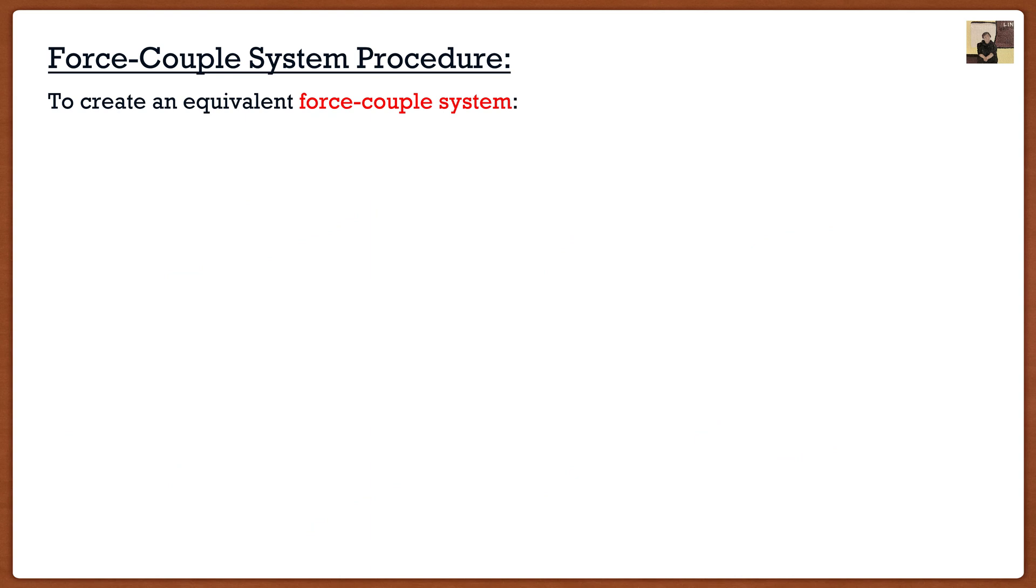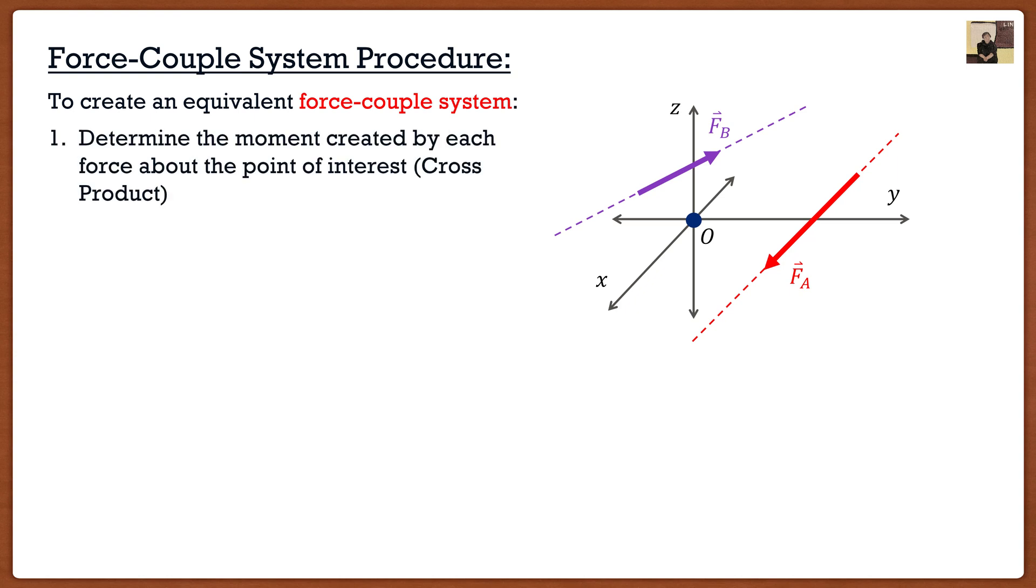I find that procedure always helps students visualize, okay, what are my steps going to be and why are the steps the way that they are? So if we want to create an equivalent force couple system, and that basically just means resultant force and resultant moments, well, what we do is we take our 3D vector space, we take our two forces, and we follow basically the same procedure. So in this particular case, if I wanted to create a force couple system about point O, the steps would be as follows.